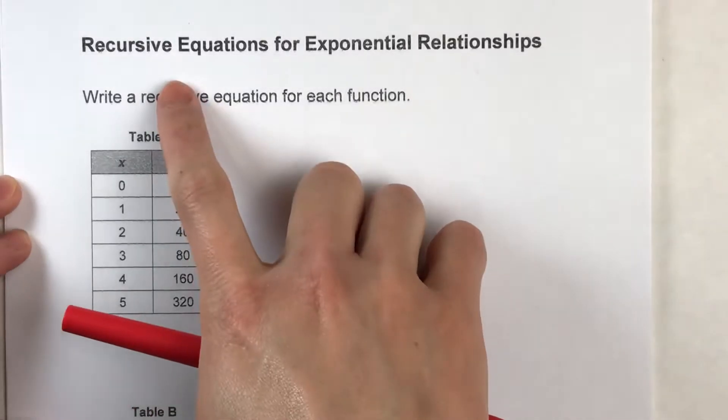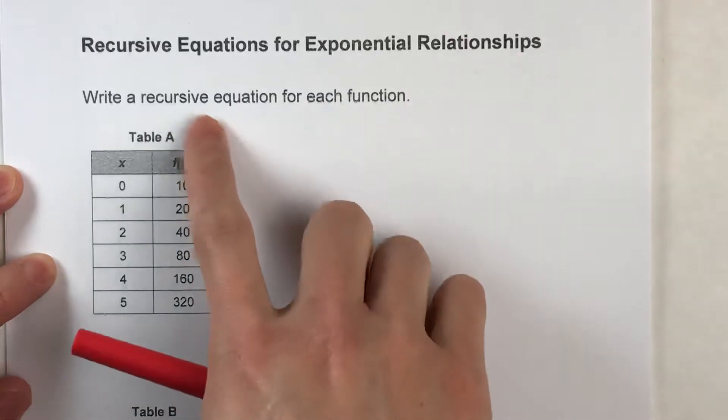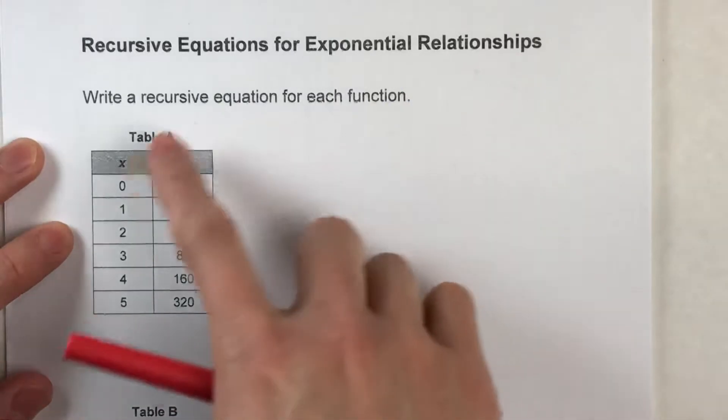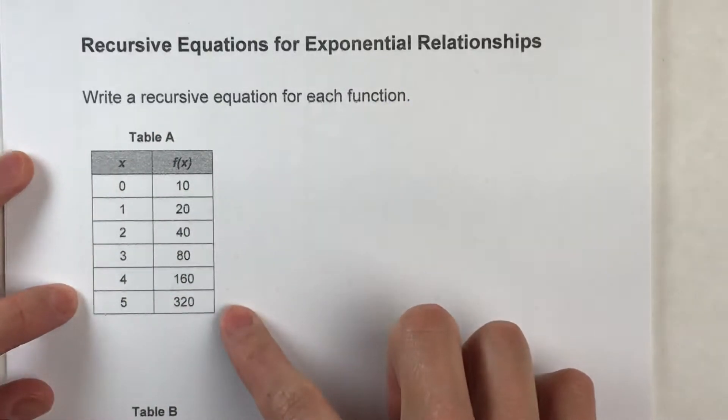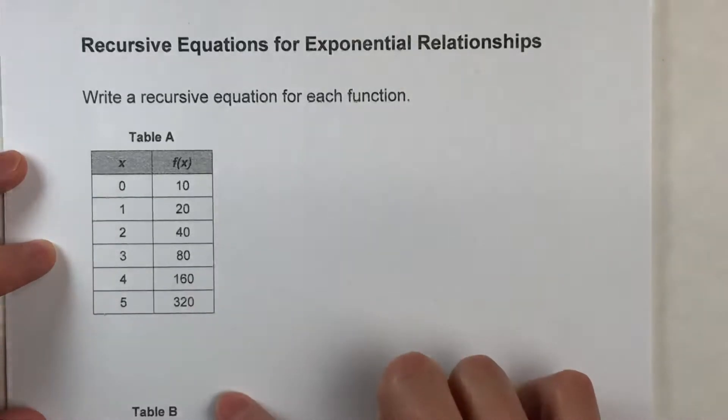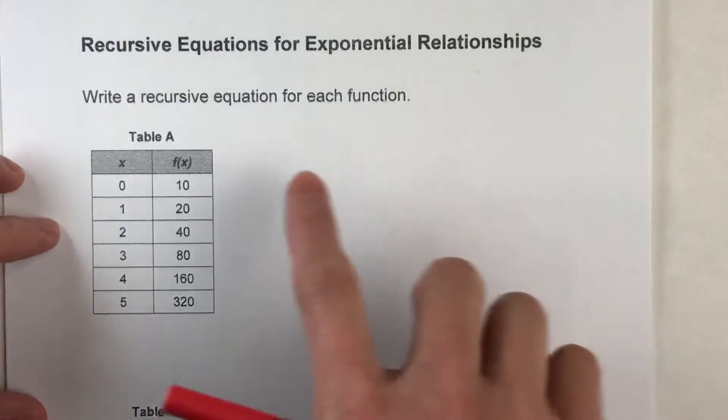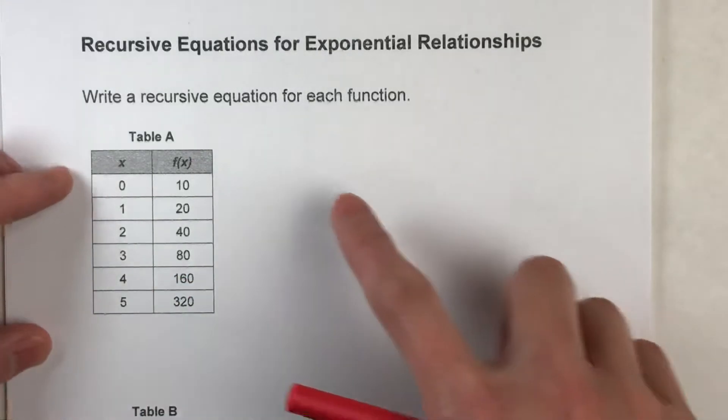So today, we're writing recursive equations for exponential relationships. Now a recursive equation is a way of writing an equation that describes a pattern based on knowing the previous number. All right, so I've got two examples to kind of walk you through it, and I'll show you how to think about it and how to write the equation.